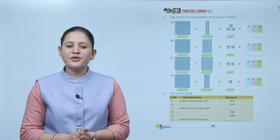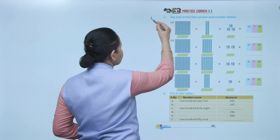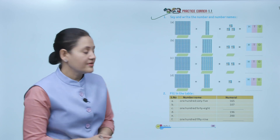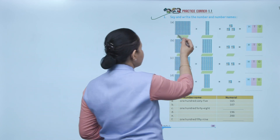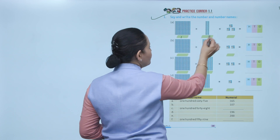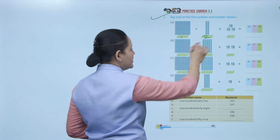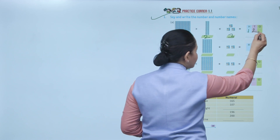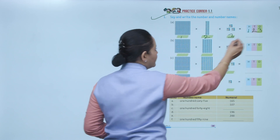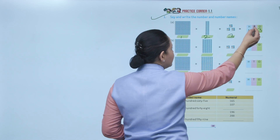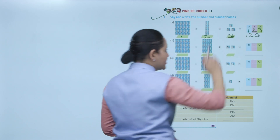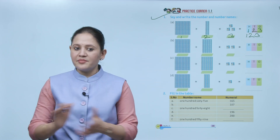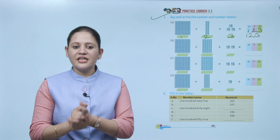Next: Practice Corner 1.1. Say and write the number and number name. This is one block of 100, two blocks of 10, and three blocks of ones, so our number is 123. Hundreds position: one; tens position: two; ones position: three. Number is 123. Like this, we will write all the numbers.